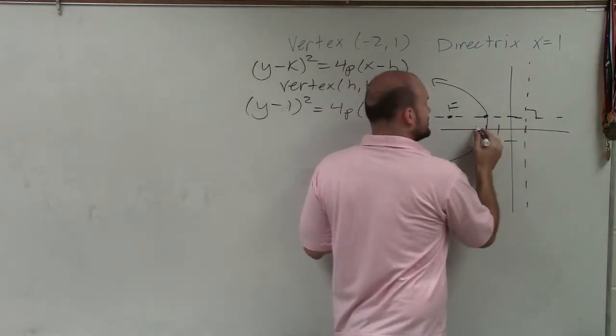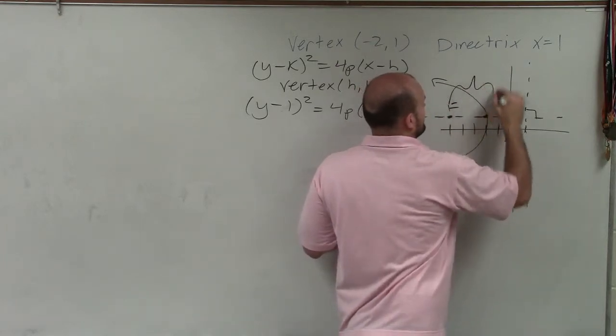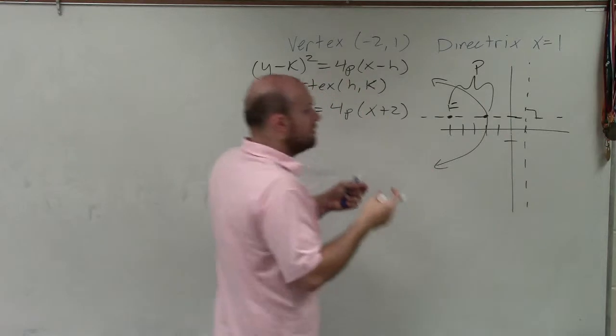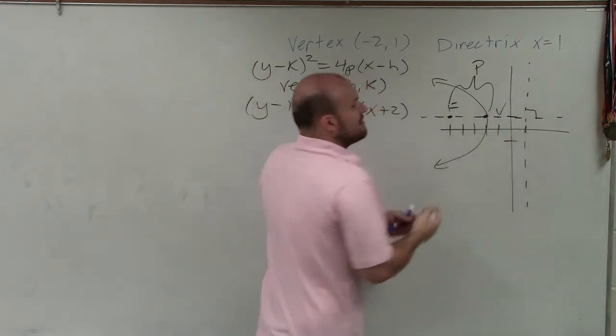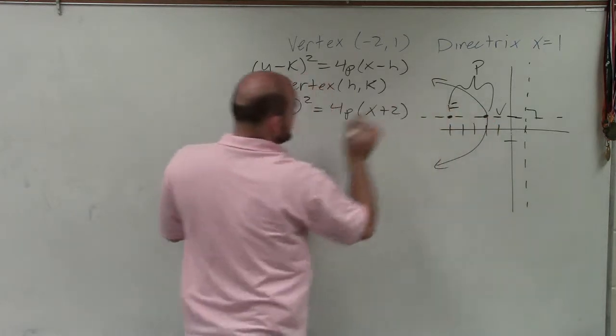That means all I need to do is go 1, 2, 3 to the left to find p. But notice, going from my vertex to my directrix, I'm going in the negative direction. Therefore, p is going to be negative.